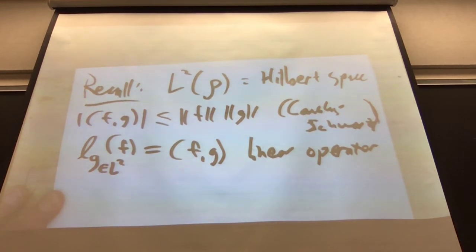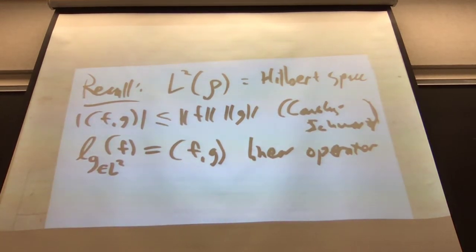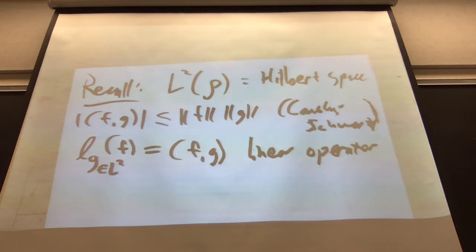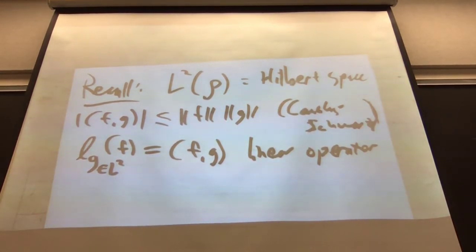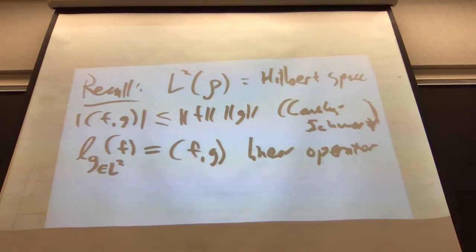Why? What does separable mean? A metric space is separable if there's a dense countable subspace — just like Q in R. You do something with rationals, like step functions generated from rectangles whose corners are at the rationals. L2 of R^d is separable. In general, whether L2 of X with a metric is separable depends on delicate things about X.